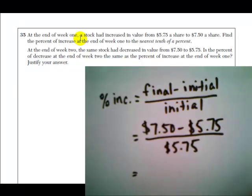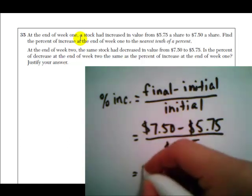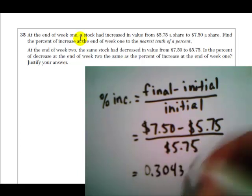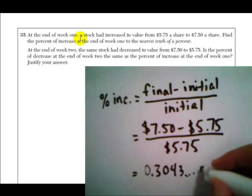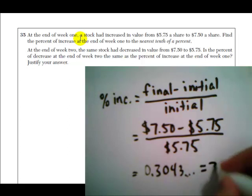Just go into a calculator, 7.5 minus 5.75, and divide that by 5.75, to the nearest tenth of a percent. So what we get is 0.3043 and a bunch of numbers afterwards. Changing this to a percent, this is 30.4%.